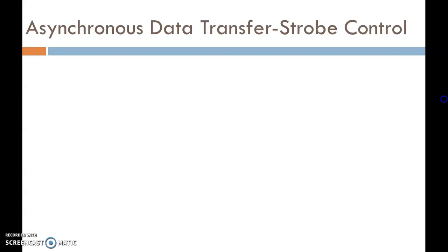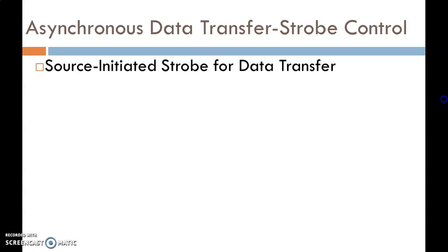Now let's start our session with the first method: Strobe Control. In Asynchronous Data Transfer, there is no clock on both sides — sender and receiver. So first of all, a signal is passed from source to destination to inform about the data transfer. In the Strobe Control method, there are two types. The first is Source-Initiated Strobe for Data Transfer, meaning the Strobe signal is initiated by the source unit.